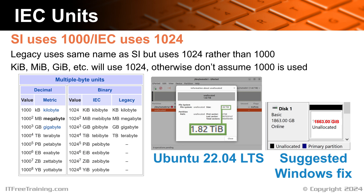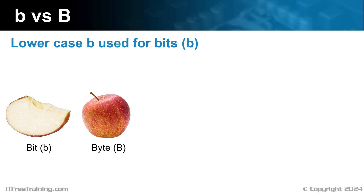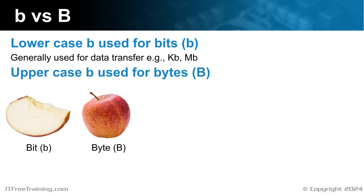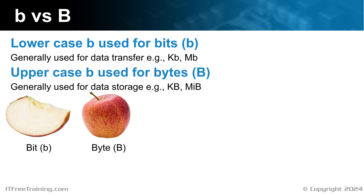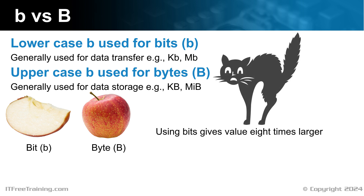Before I move on to look at network transfer speeds, I first want to look at some terminology that can be confusing when working with storage and transfer speeds. When looking at the abbreviations used with storage and data transfers, lowercase b will be used for bits. Generally, bits will be used to measure data transfer. Bytes will use an uppercase B and will be used for bytes. Bytes are generally used for data storage. Using bits will make the value 8 times larger, so to convert between the two, you just need to multiply or divide by 8.